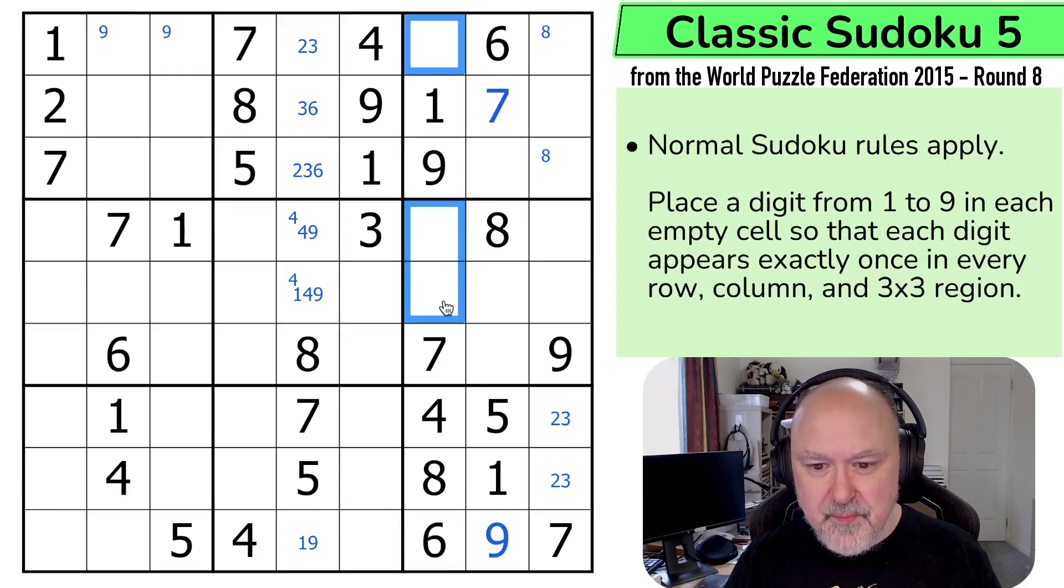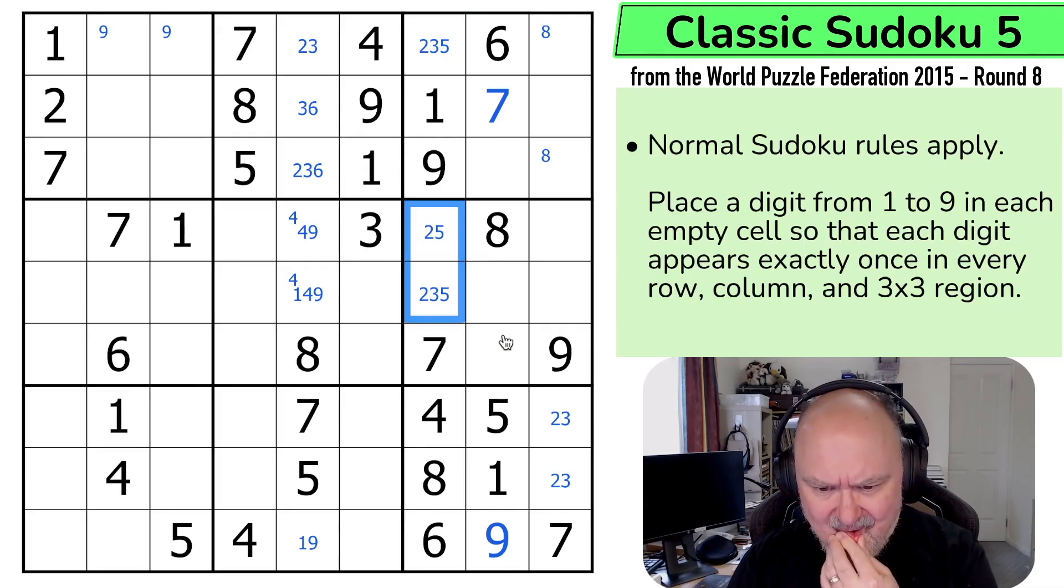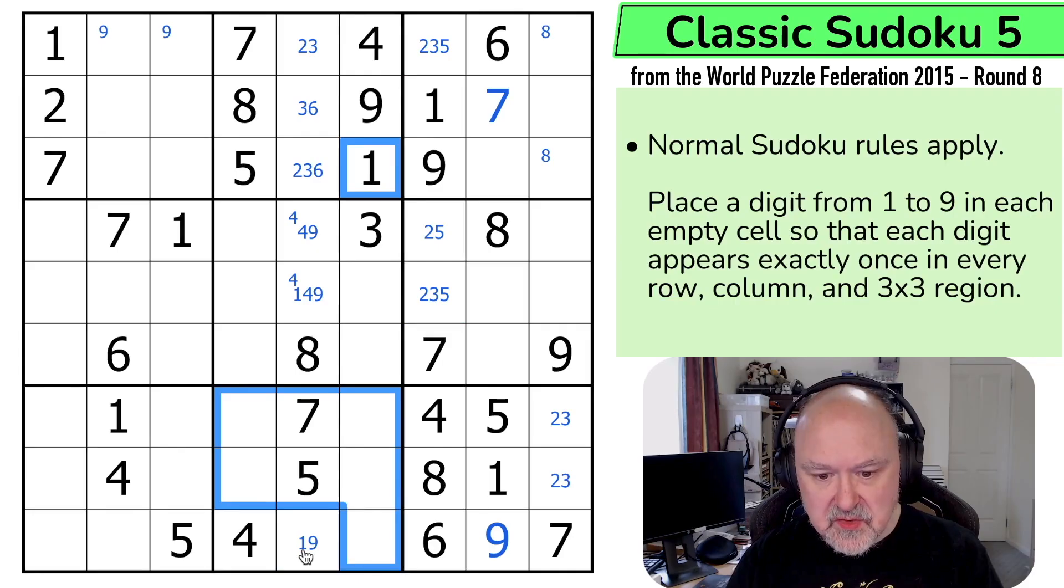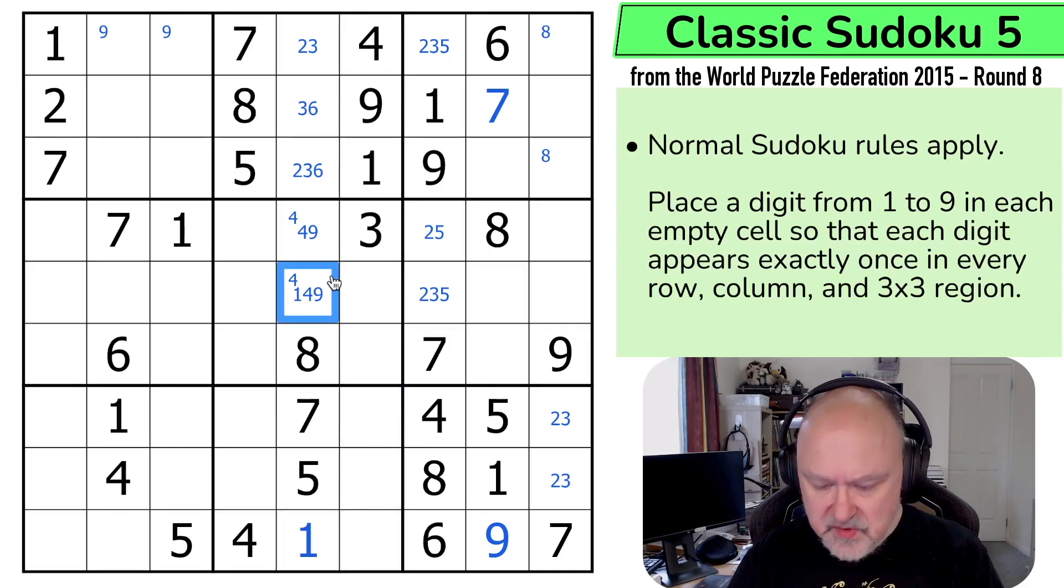So what's this triple? This column is very full. 2, 3, 5. This is actually a 1, because 1 can't go in any of those, and that 1 is looking down. So this is the 1, which means this isn't 1. This is a 4, 9 pair.